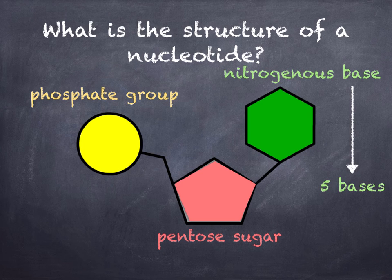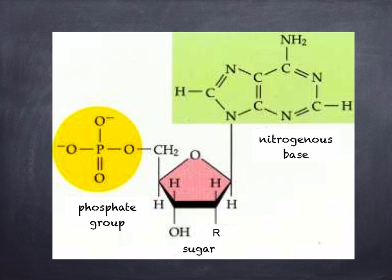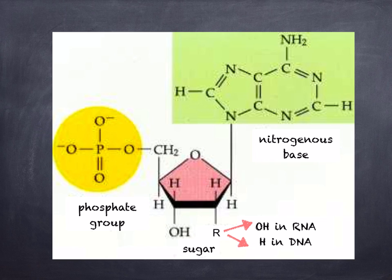The nitrogenous base can be one of five different bases, which we'll look at in a moment. In the sugar, if the R group is OH, you find it in RNA, so it's ribose. If the R group is hydrogen, this is what you find in DNA. Hence, you get the name deoxyribonucleic acid, which means the oxygen is missing.